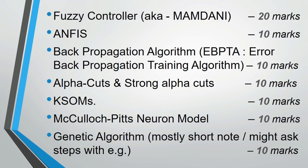If you have one day for the paper, start with the fuzzy controller first. Allow only 2-3 hours for the fuzzy controller — it is worth 20 marks. Take the past papers and solve the sums from past papers. If you have enrolled in our course on our website, go back to the curriculum. We have updated it. In the extras section, we have added past papers, so you can get them from there. The first focus is to solve two sums of fuzzy controller.